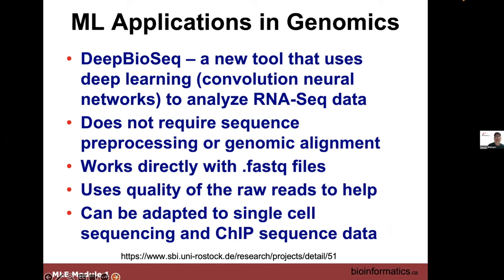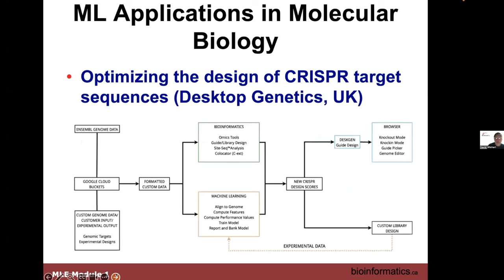Machine learning has been used to optimize CRISPR target sequences, an area of active research where you need guide DNA design to ensure optimal CRISPR-Cas9 mutations. Machine learning is used in cancer diagnosis and prognosis from genetic data, linking genomic data to clinical data, patient history, electronic health records, and even genealogical data — since cancer can run in families. Big data approaches have improved cancer risk assessment substantially at hospitals including Intermountain Health.